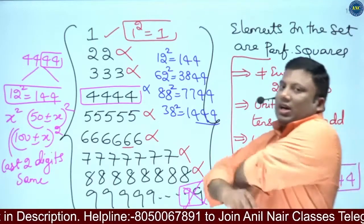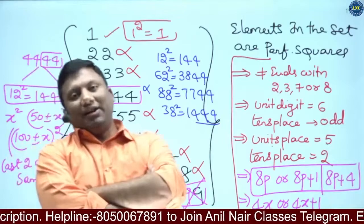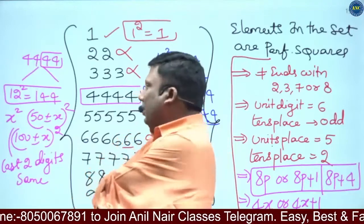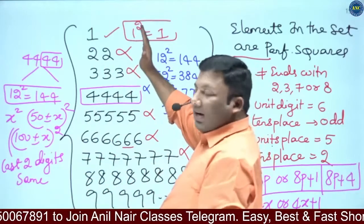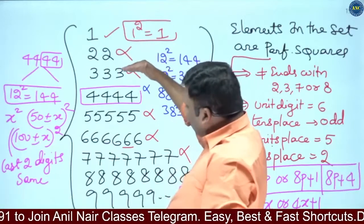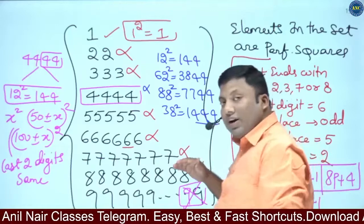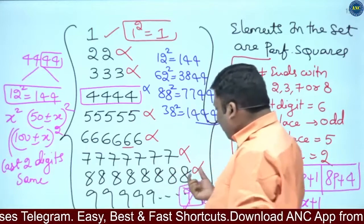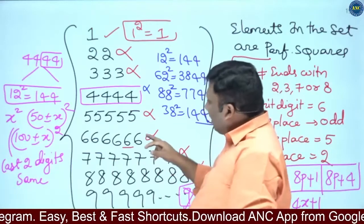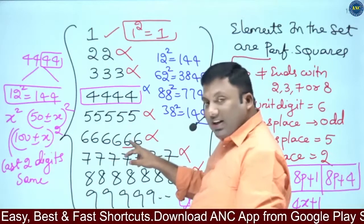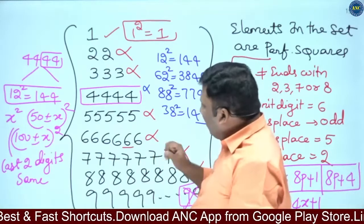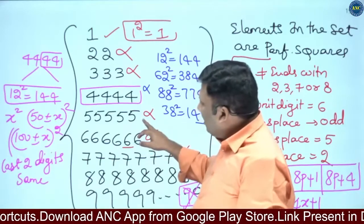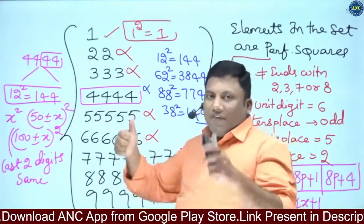Summary: 1 written once — perfect square (1² = 1, valid). 2 written twice (22) — ends in 2, out. 3 written thrice (333) — ends in 3, out. 4 written 4 times (4444) — not a perfect square as shown. 5 written 5 times (55555) — tens digit not 2, out. 6 written 6 times (666666) — tens digit even, out. 7 written 7 times — ends in 7, out. 8 written 8 times — ends in 8, out. 9 written 9 times (999999999) — remainder 3 mod 4, out.